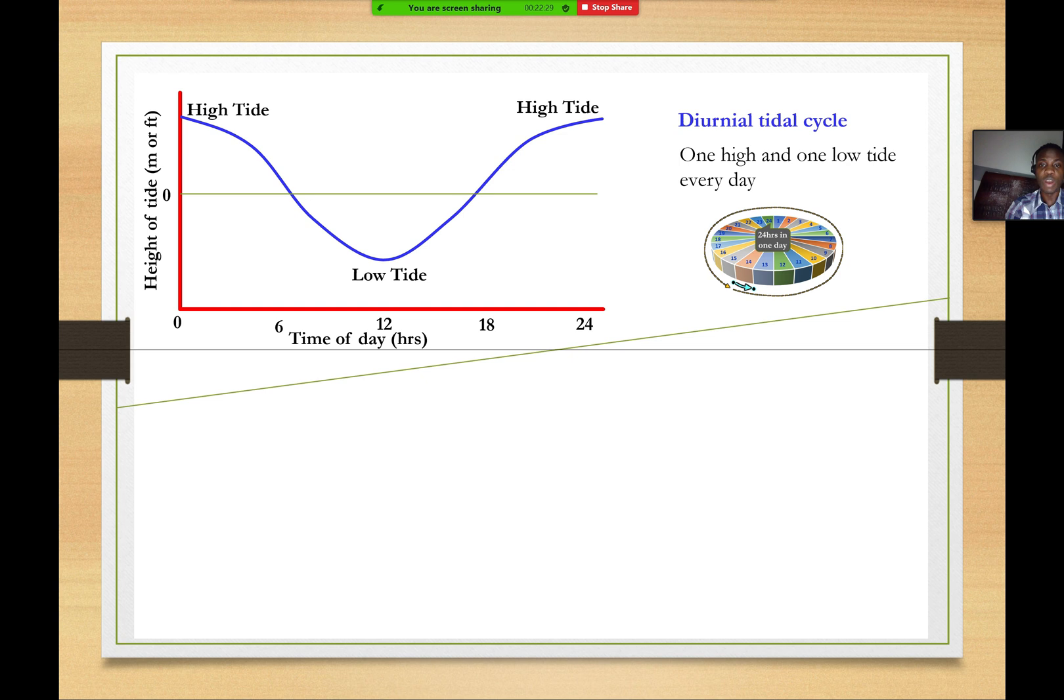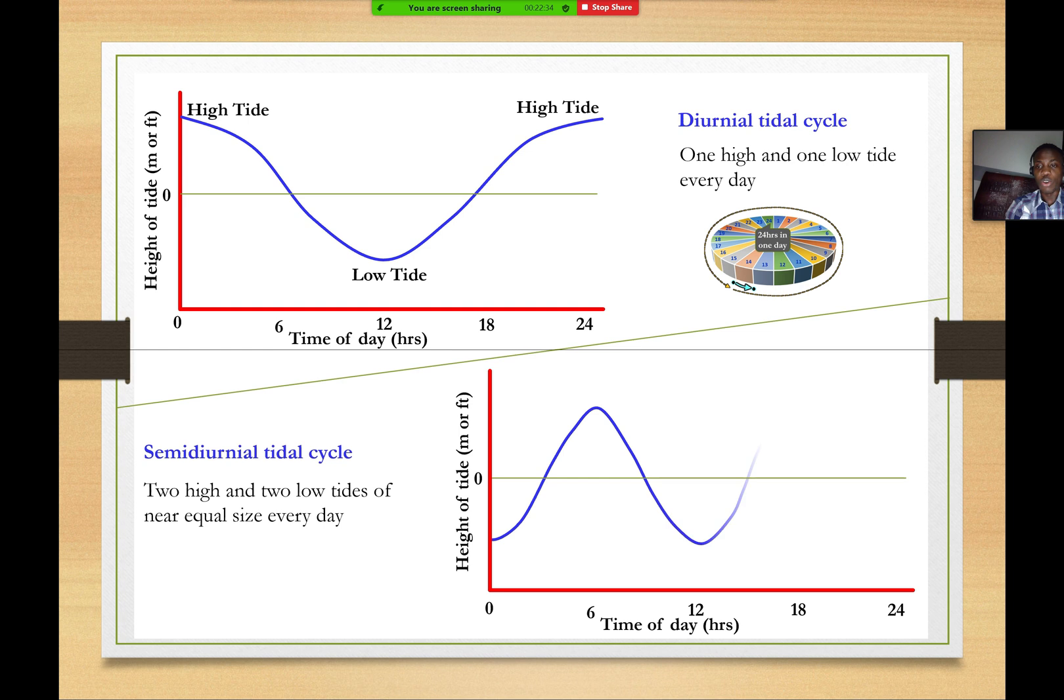That means in one day, you have just one high tide and one low tide. There is another kind called the semi-diurnal tidal cycle or semi-diurnal tide. And that's where you have in 24 hours, two high tides and two low tides of almost equal sizes in tidal heights. So tidal height will be the vertical elevation from this point to this point. In this case, you have near equal tidal height for both the high tide phase and the low tide phase.